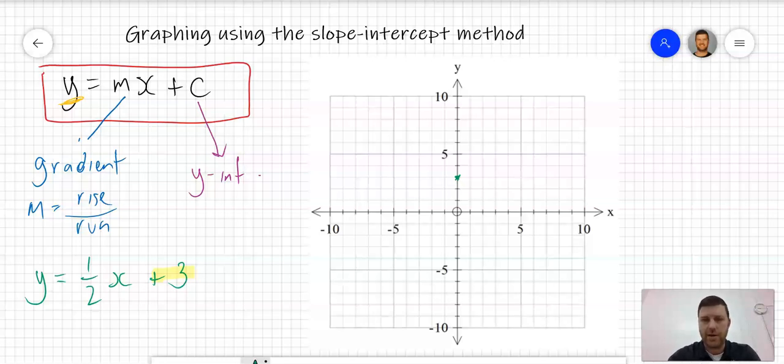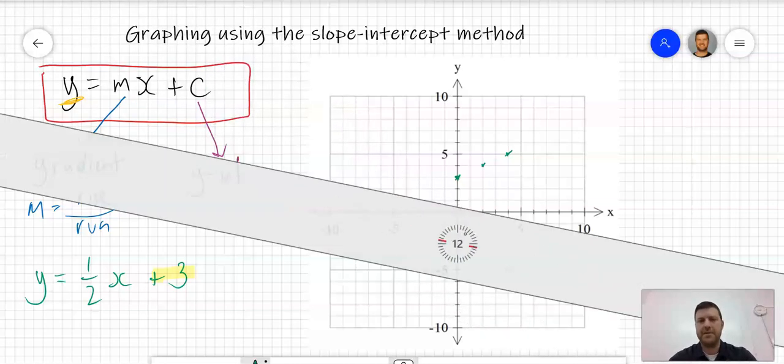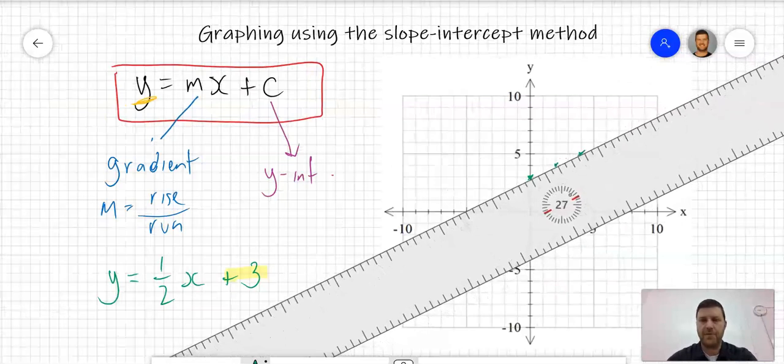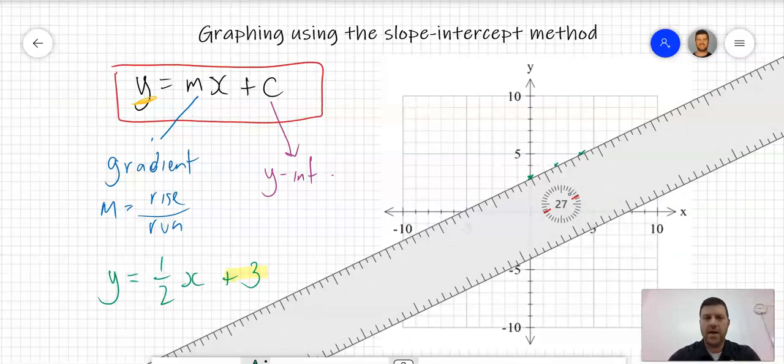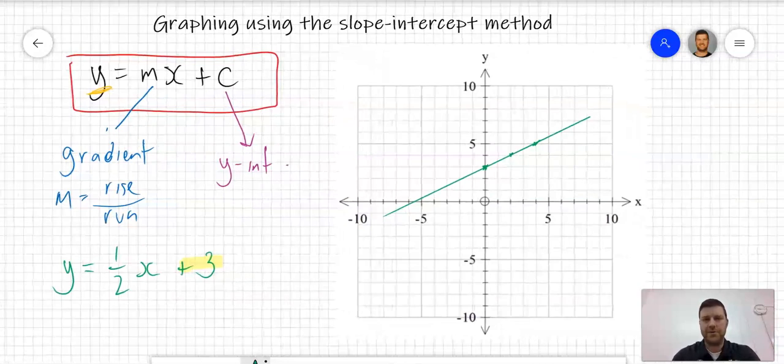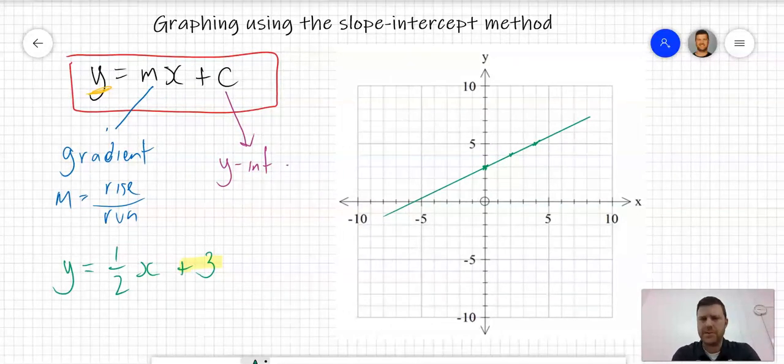I'm going to go up 1 square and across 2 to this point, and I'm going to do it again just so we've got three points, enough to draw a straight line through. Now make sure when you're graphing this, use a ruler and you can actually extend that line beyond those three points. I would prefer you guys to do that as well. So it's as simple as that.